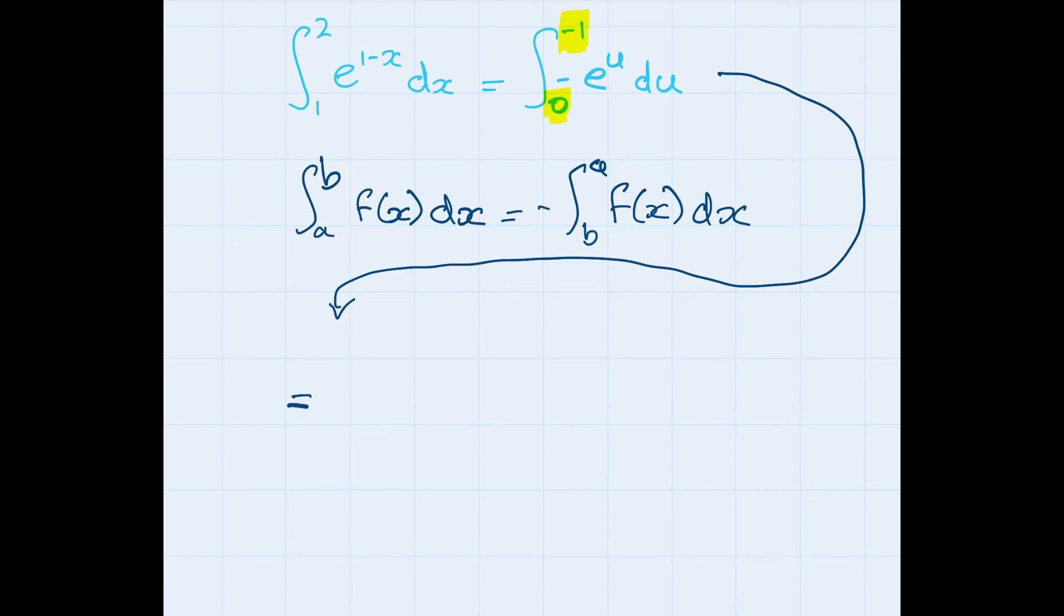So with this we can now transform our integral because we've got this minus sign here. Right, we're sort of already there, so our integral just becomes the integral from minus 1 to 0 of e to the u du.